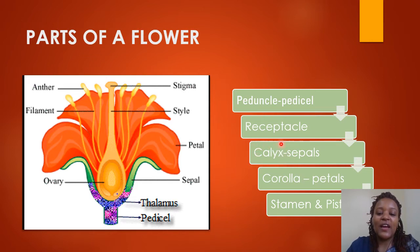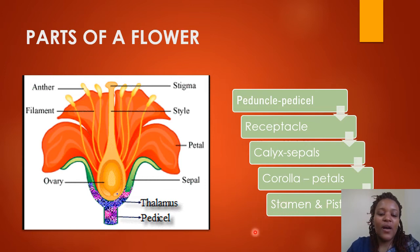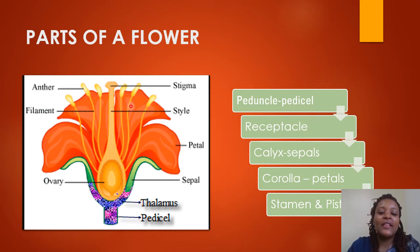The calyx is composed of the sepals — the green parts. Then we have the corolla, which is made of petals — the attractive, colorful covers. Then we have the stamen and the pistil. The stamen is made up of the anther and the filament. The pistil is composed of the stigma, the style, and the ovary.